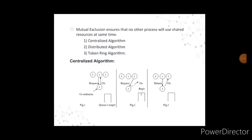Advantages of the centralized algorithm: it guarantees mutual exclusion, it is a fair approach with requests granted in first-come first-serve manner, and there is no starvation. Starvation refers to the indefinite postponement of a process because a required resource is never allocated to it even though it becomes available. The centralized algorithm is easy to implement and requires only 3 messages per use of the critical section: request, grant, and release.